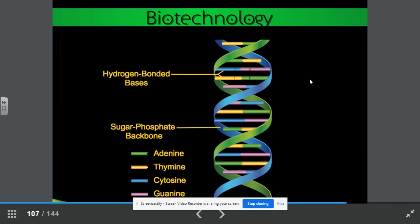We made 3D DNA in class together. Here we have our hydrogen bonded bases, our base pairs, our sugar phosphate backbone. And remember, adenine, thymine, cytosine, guanine. Those are the parts.